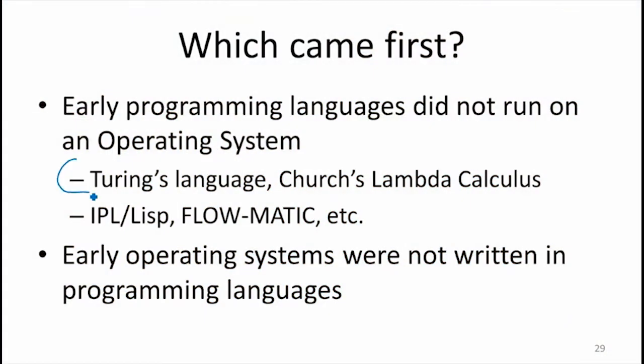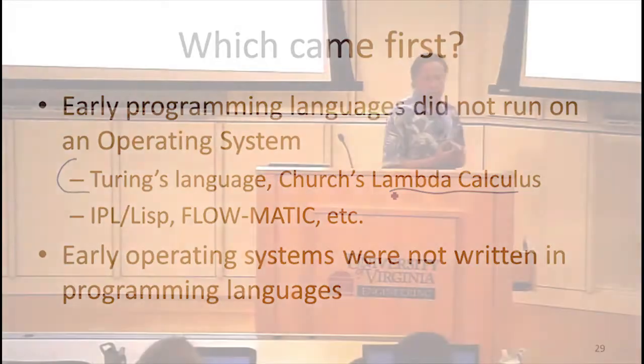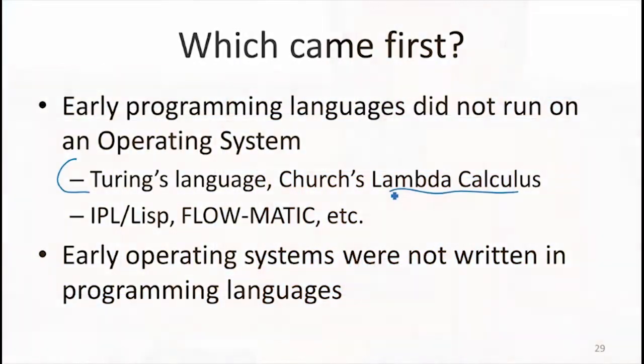The things that were at least what I would consider the first real general purpose precise programming languages were the language that Turing used in the paper that introduced the Turing machine in the 1930s. And around the same time, Alonzo Church had a language, Lambda Calculus, that's a string replacement language that was also a Turing-complete programming language. So those two happened around the same time. You could argue even more that the language that Ada was using to describe programs for the hypothesized Babbage machine was also a programming language. There was certainly not an operating system, at least anything close to what we're calling an operating system in this class, around for them to run on. There wasn't even a computer.